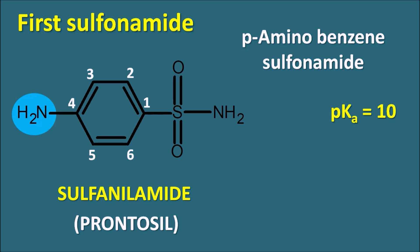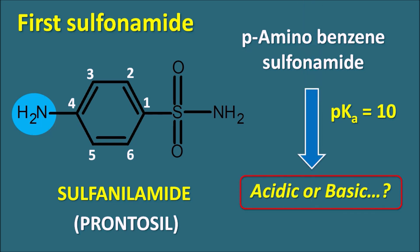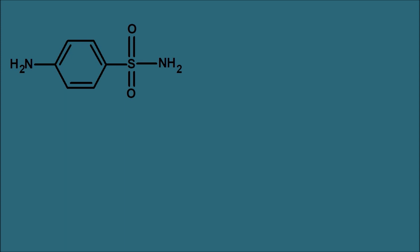Higher pKa indicates lower acidity. With a pKa of 10, we need to determine whether sulfonamide is acidic or basic. A sulfonamide structure has an NH2 group on benzene (aniline-like, acting as a base), but it also has a sulfonamide moiety where the amide nitrogen carries acidic protons.